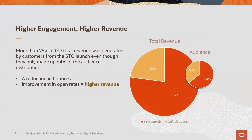With that, you'll get higher engagement and higher revenue. Example metrics here show that more than 75% of the total revenue was generated by customers from the Send Time Optimization launch, even though they only made up 64% of the audience distribution. So reduction in bounces and improvement in open rates means higher revenue.